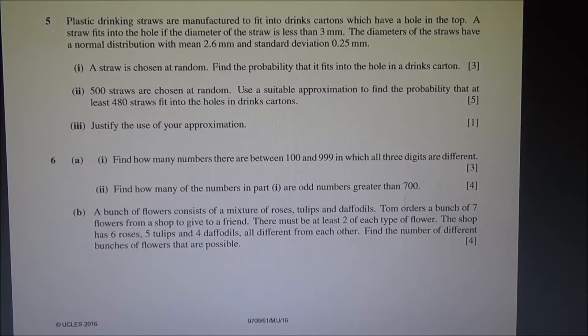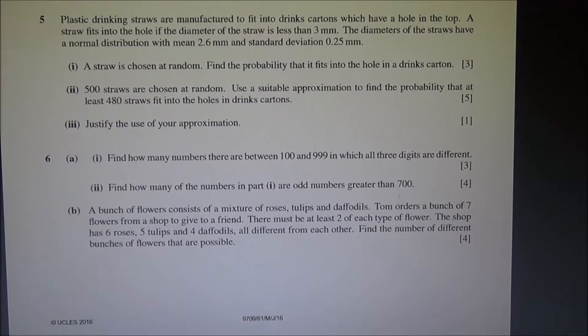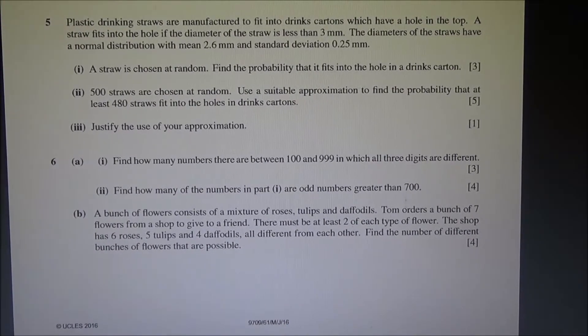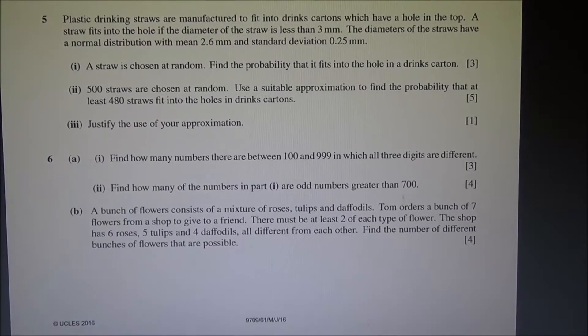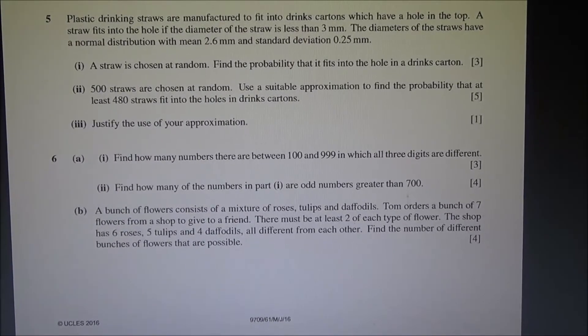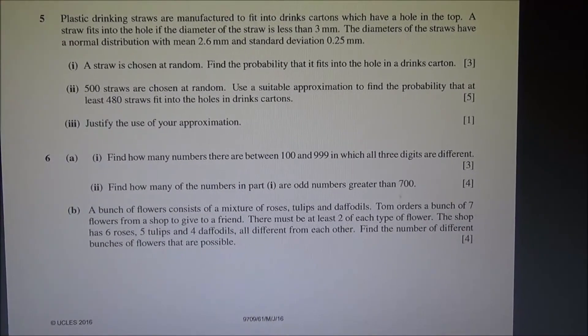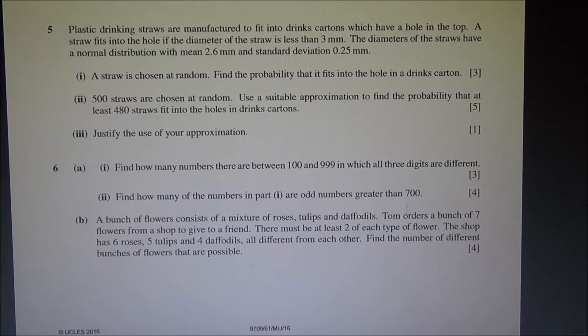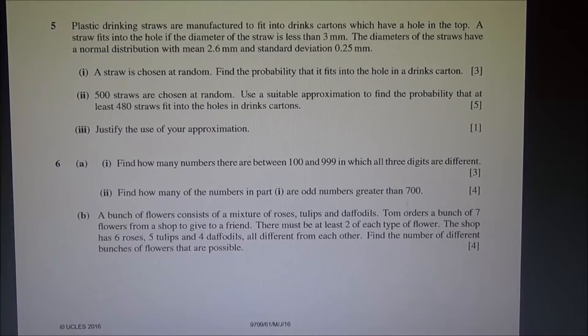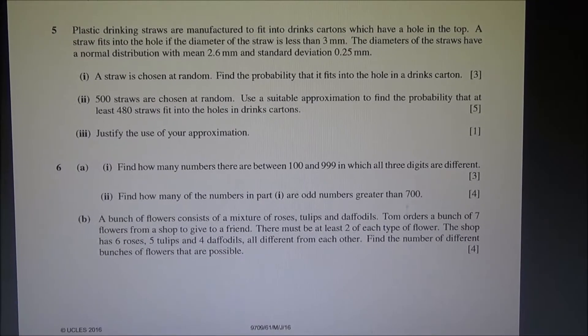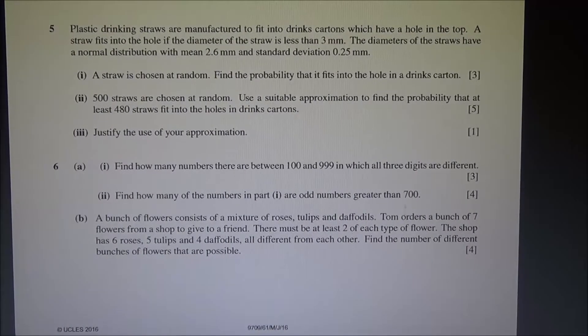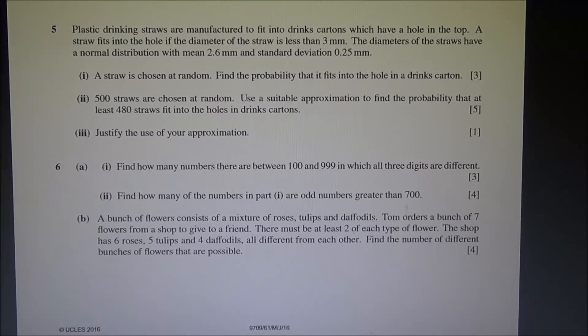Hi, question number 5 from June 2016 Advanced Level Maths HSC Statistics 1. Plastic drinking straws are manufactured to fit into drinks cartons with a hole in the top. A straw fits if its diameter is less than 3 mm. The diameters have a normal distribution with mean 2.6 mm and standard deviation 0.25 mm. A straw is chosen at random. Find the probability that it fits into the hole.